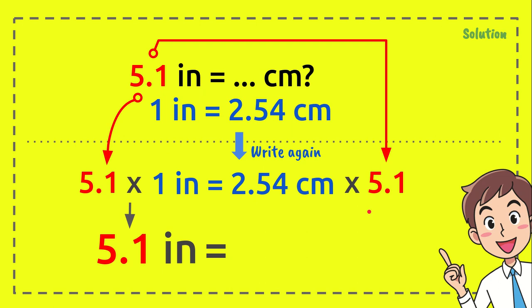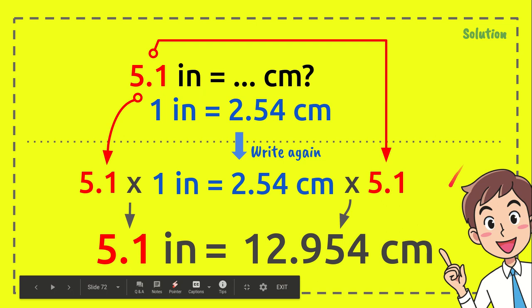And 2.54 centimeters times 5.1 equals 12.954 centimeters. And that's the answer. So 5.1 inches equals 12.954 centimeters, and that's all of it.